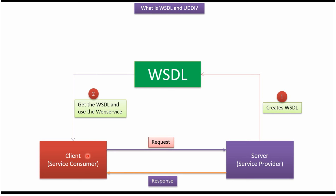There are two ways a service consumer can get the WSDL file from a service provider. The first way is if the service provider knows the service consumer, then the service provider can directly hand over the WSDL document or WSDL URL to the service consumer, and the service consumer can use that WSDL to consume the web service.